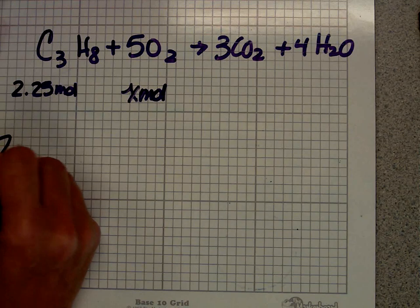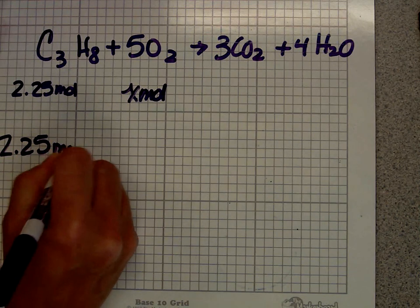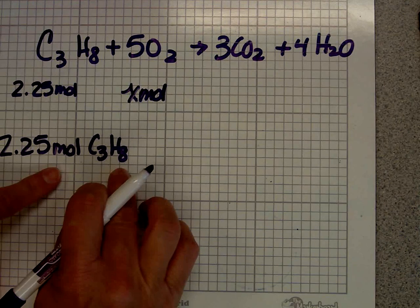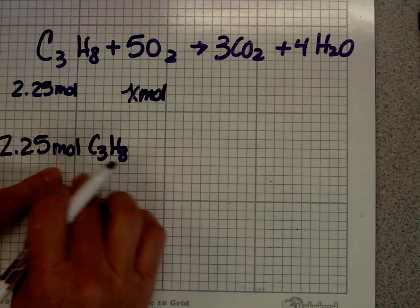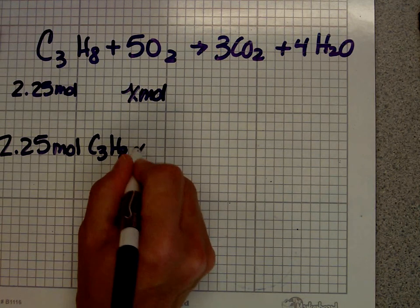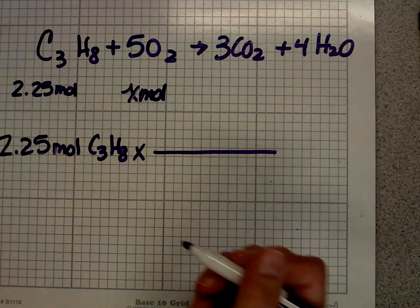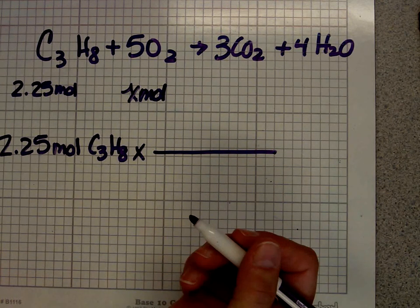Start with what you know. The first thing you write is what you know. I have 2.25 moles C3H8. If you don't like to write the units out, get over it. You need to write the units out. That's the key to chemistry. When I do these kinds of problems, I always multiply by something, some fraction that's equal to one.